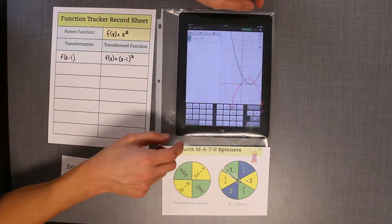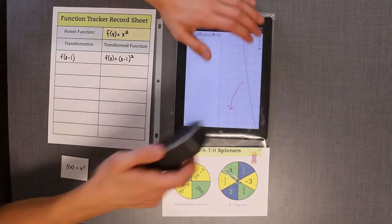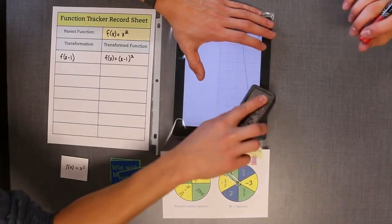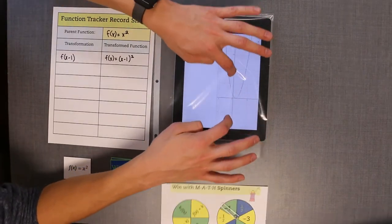Erase the screen and turn off only the equation of the transformed function. Play passes to the player on the left until each player has taken a turn with the same parent function. The role of function selector moves to the left and play continues from step one.